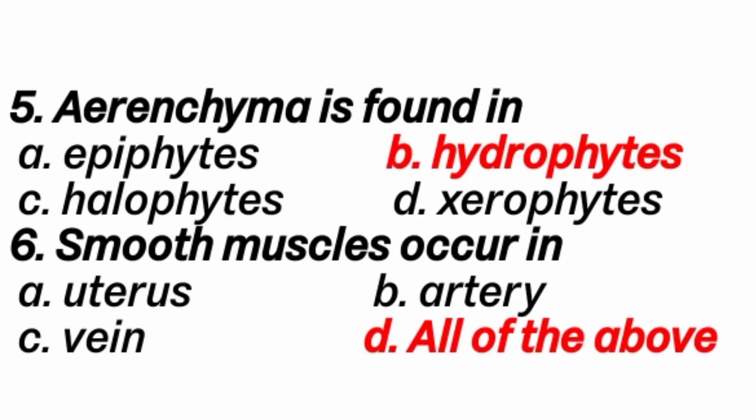Question 5: Aerenchyma is found in? Answer is B option: Hydrophytes. Question 6: Smooth muscles occur in? Suppose uterus, veins and arteries — these are made up of smooth muscles.